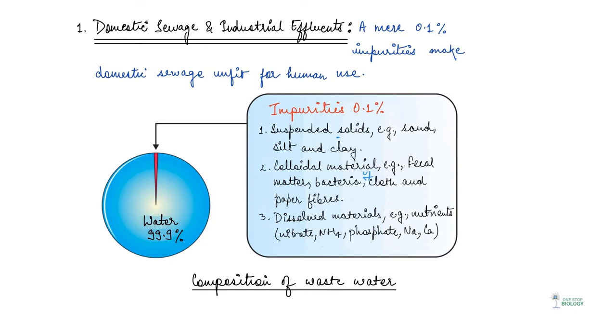So basically, if we see this chart here as well, you will see that out of the entire water body, the composition of wastewater, impurities are just 0.1%. So these are basically suspended solids and sand, silt and clay. Then there are colloidal material like fecal matter, bacteria, cloth and paper fibers. And then there are some dissolved materials like nutrients, nitrate, ammonia, phosphate, sodium and calcium.